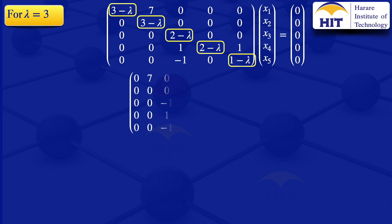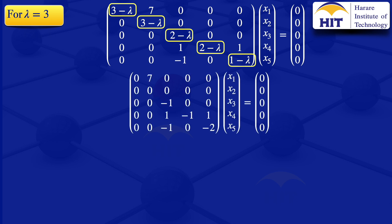The resulting matrix we have is therefore: 0, 7, 0, 0, 0 / 0, 0, 0, 0, 0 / 0, 0, minus 1, 0, 0 / 0, 1, minus 1, 1, 0 / 0, minus 1, 0, minus 2 — multiplied by the column vector x, equal to the zero vector.